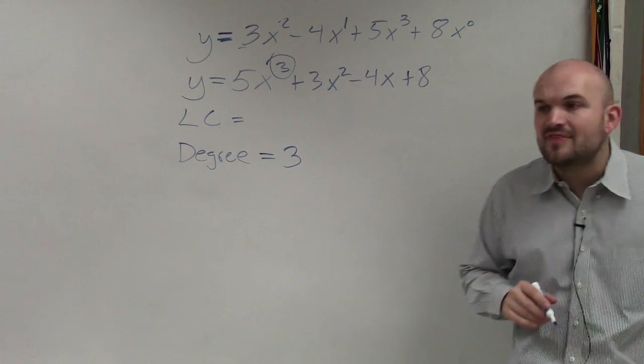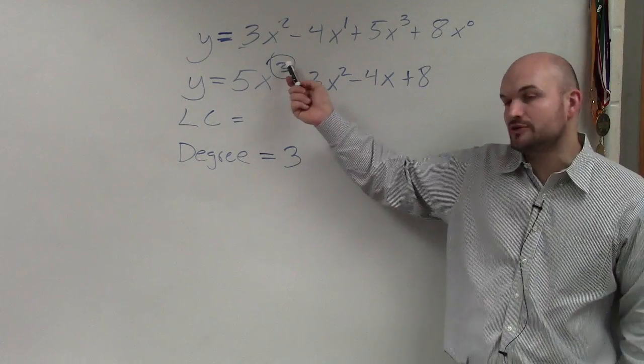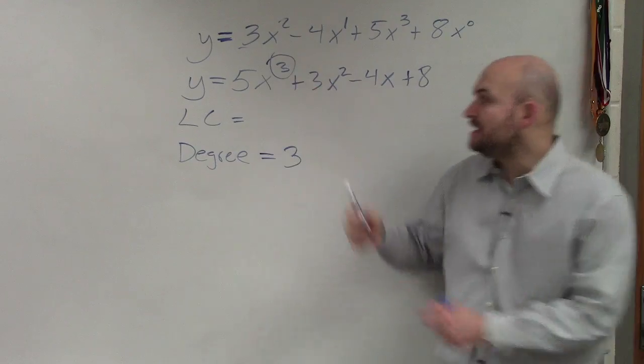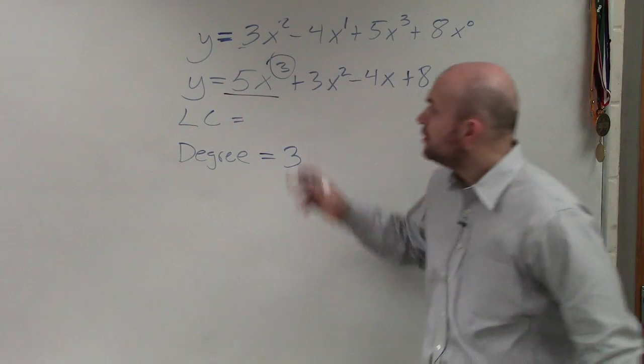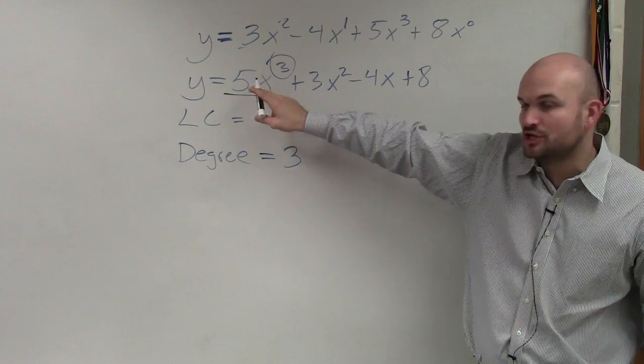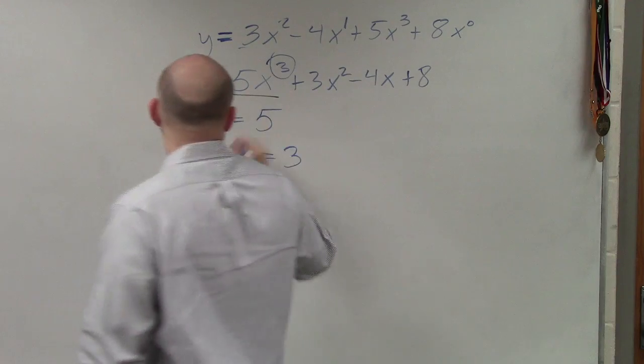You can see here's my degree. This is the largest exponent. And the degree is a part of your leading term, which is 5x cubed. The coefficient of this term is 5. So therefore, my leading coefficient is going to be 5.